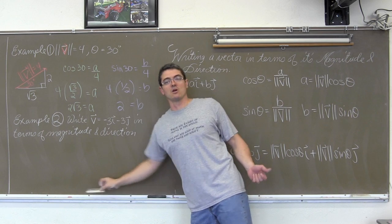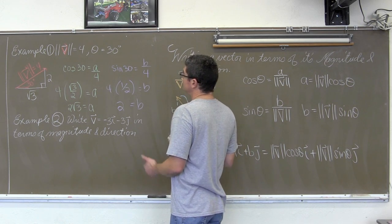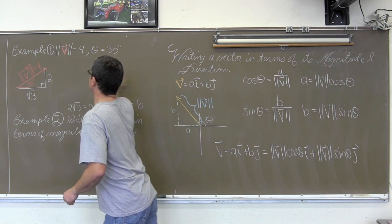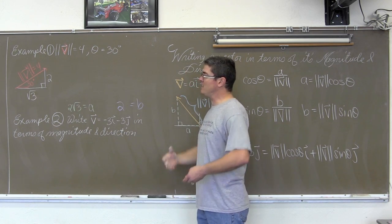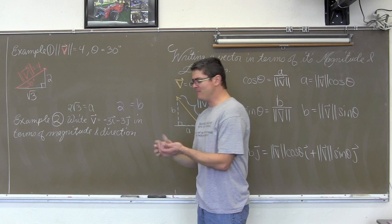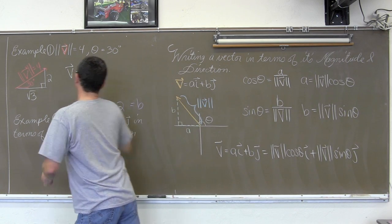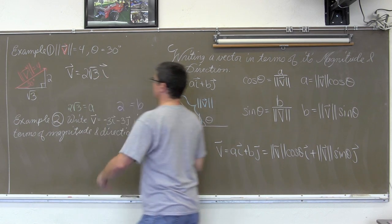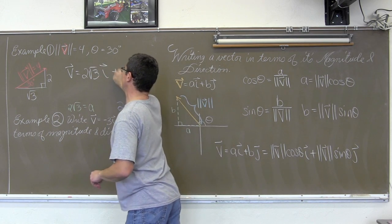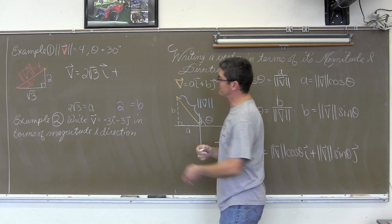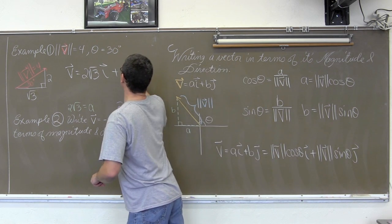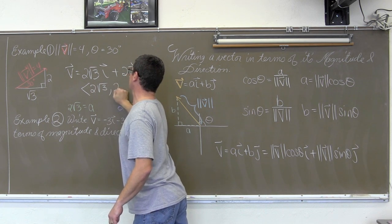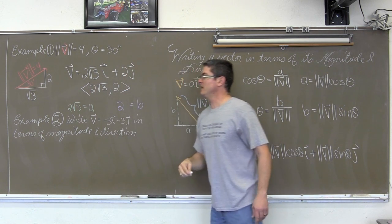But the point is to show you how all this works. So, that all being said, this vector with a magnitude of 4 and a direction of 30 degrees can be described as 2 square root of 3 i plus 2j — or, in the bracket notation my textbook uses, simply ⟨2√3, 2⟩.